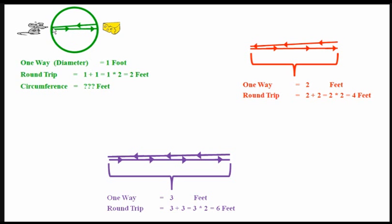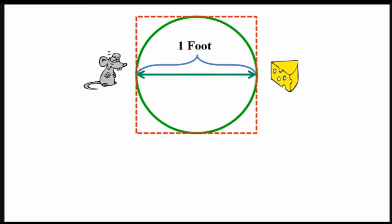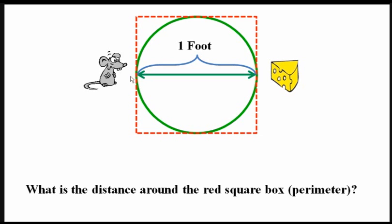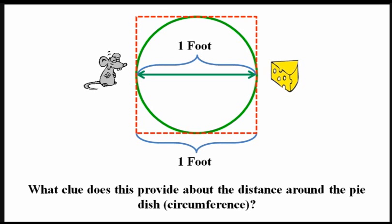Oh my word, what on earth is this? There's a pie dish sitting right in front of his mouse hole. Mac would just die to run straight across the circle — he would die to run across the diameter and just get that cheese and get back really quickly. But he can't. This is something in math that we call a constraint. Mac is constrained; he is unable to run straight across that circle and get the cheese.